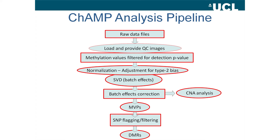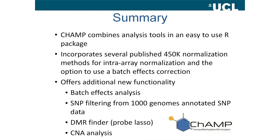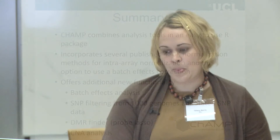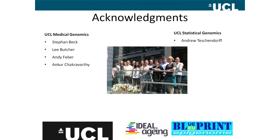The pipeline offers all of these steps and you can do them individually, or there's a function where you can run everything together. To summarize: it's a package written in R that incorporates several published normalization methods for intra-array normalization, the option to use batch effects correction, and new functionality using SVD for batch effects analysis, SNP filtering from 1000 Genomes annotated SNP data, a DMR finder using the probe lasso method, and CNA analysis. It's available for download, just being released publicly, so I welcome feedback and any ideas for improvement. I'd like to thank Lee Butcher, Andy Fieber, and Andrew Teschendorf for their contributions.